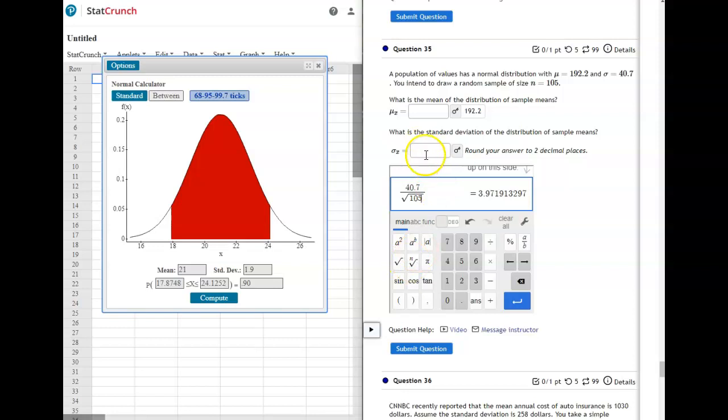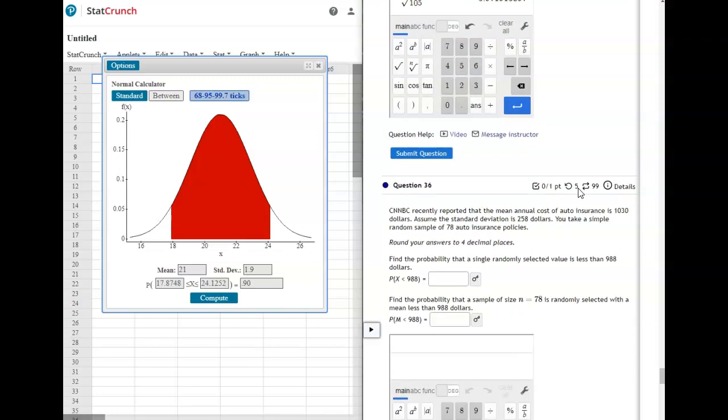So instead of using 40.7 for your standard deviation, we're going to use 3.97. So the mean doesn't change, but the standard deviation does if you're doing it for a sample instead of just one individual object, subject, person, whatever you're dealing with.